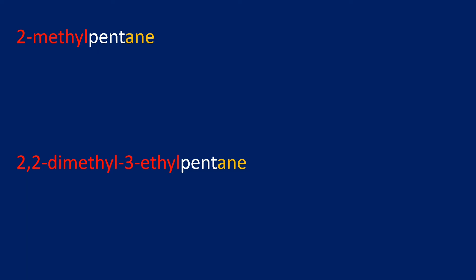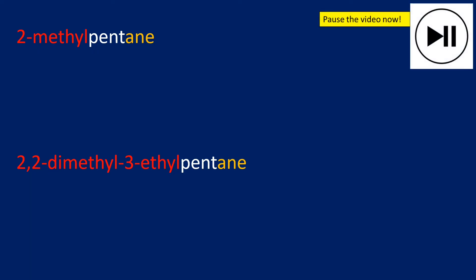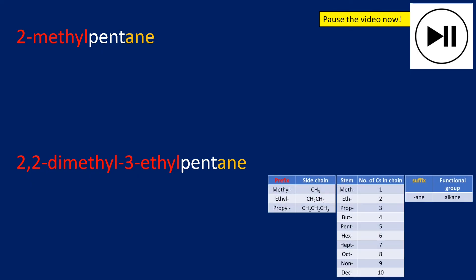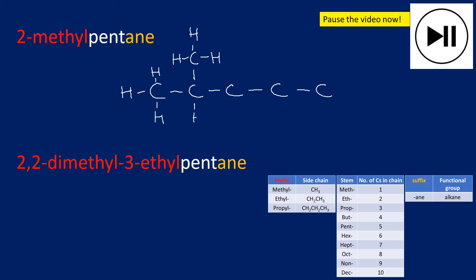The last task is the reverse: we've been given the names and now we draw the molecules. Pause the video, try to draw these two from their names, and unpause when you're ready for the answers. For 2-methylpentane: draw the stem — pentane — as five carbons in a row, one through five. Place a CH3 group on carbon two. Complete the molecule by drawing all remaining hydrogens. As a check, confirm every hydrogen has one bond and every carbon has four bonds.